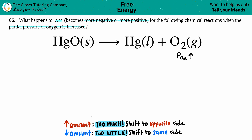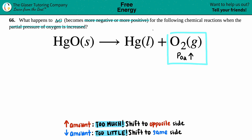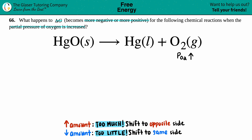We're increasing our amount. Well, you have too much — you disrupted equilibrium, you have way too much oxygen now. So what's going to happen? You're going to shift to the opposite side. Since the increase is on my product side, the reaction has to shift to the other side — it goes backwards, in the reverse direction.